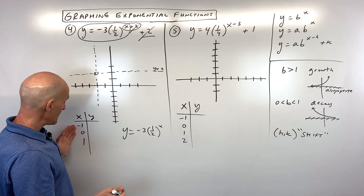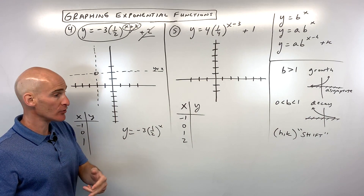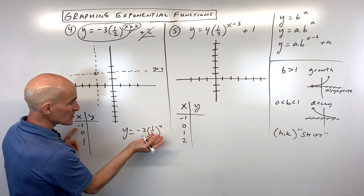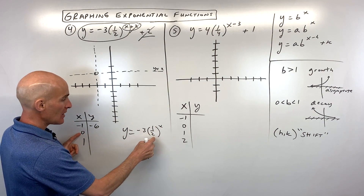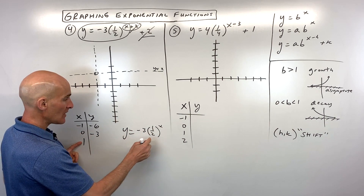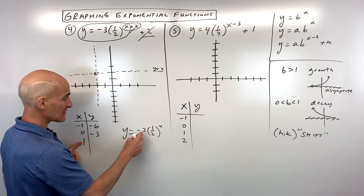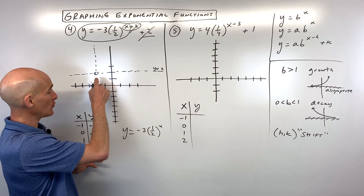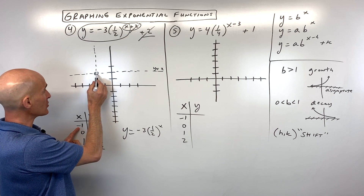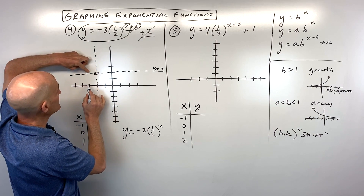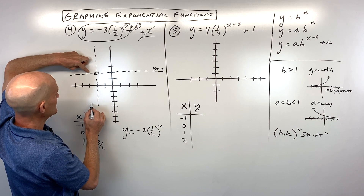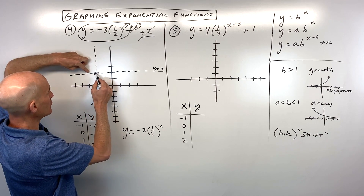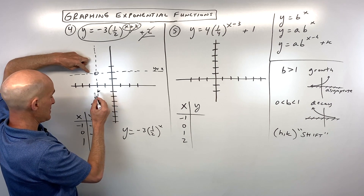Making a table for y equals negative three times one-half to the x: one-half to the negative one is the reciprocal, two, times negative three is negative six. One-half to the zero is one times negative three is negative three. One-half to the first is one-half times negative three is negative three-halves. Plotting from the shifted origin: left one down six, then zero-negative three, then right one up negative three-halves — giving a rough sketch of the graph.